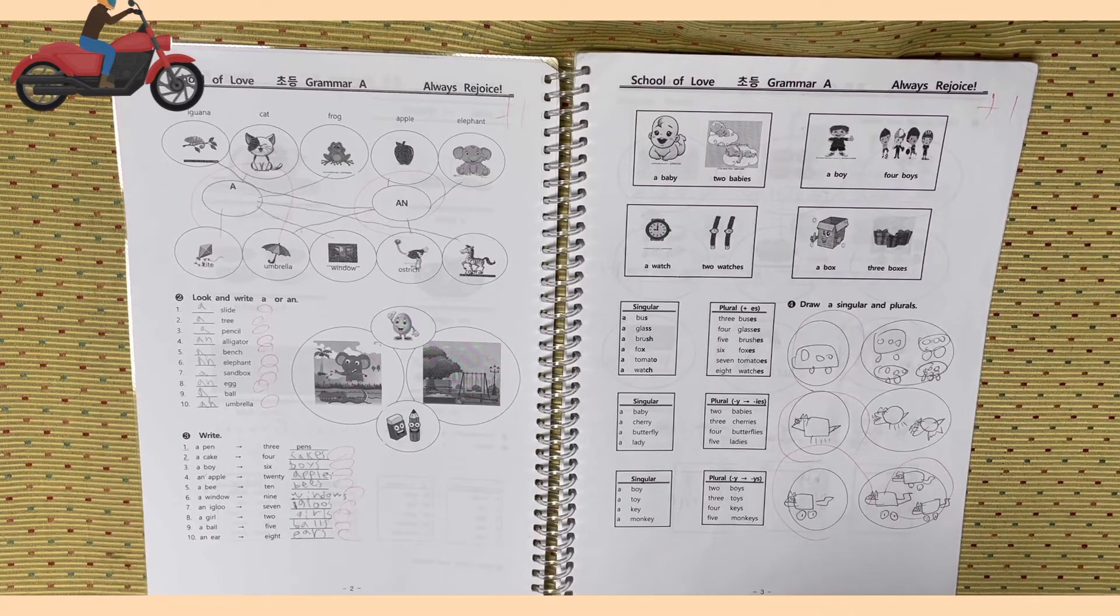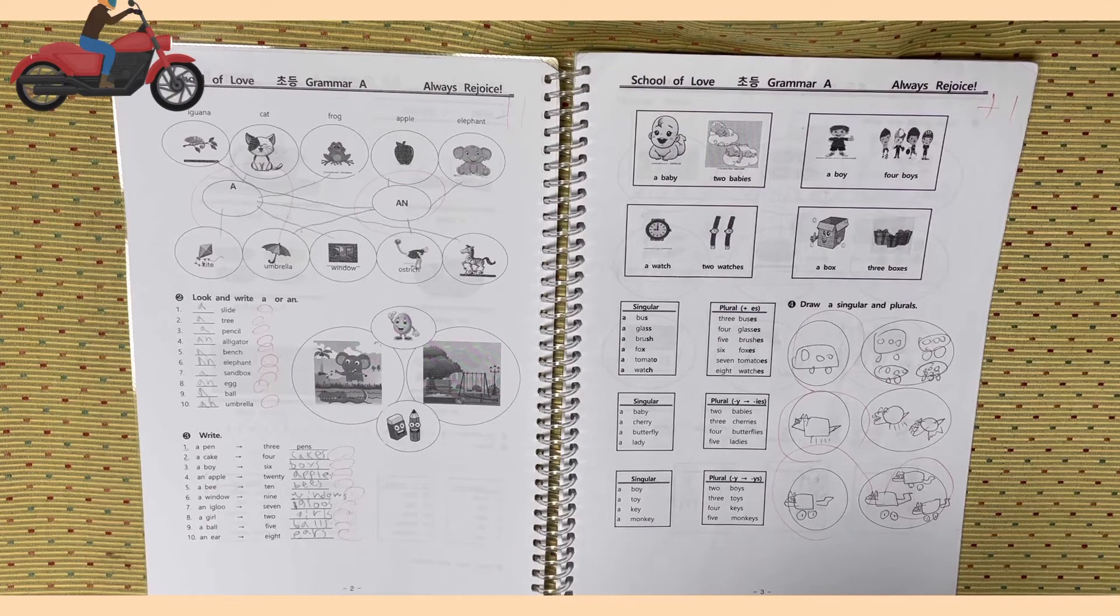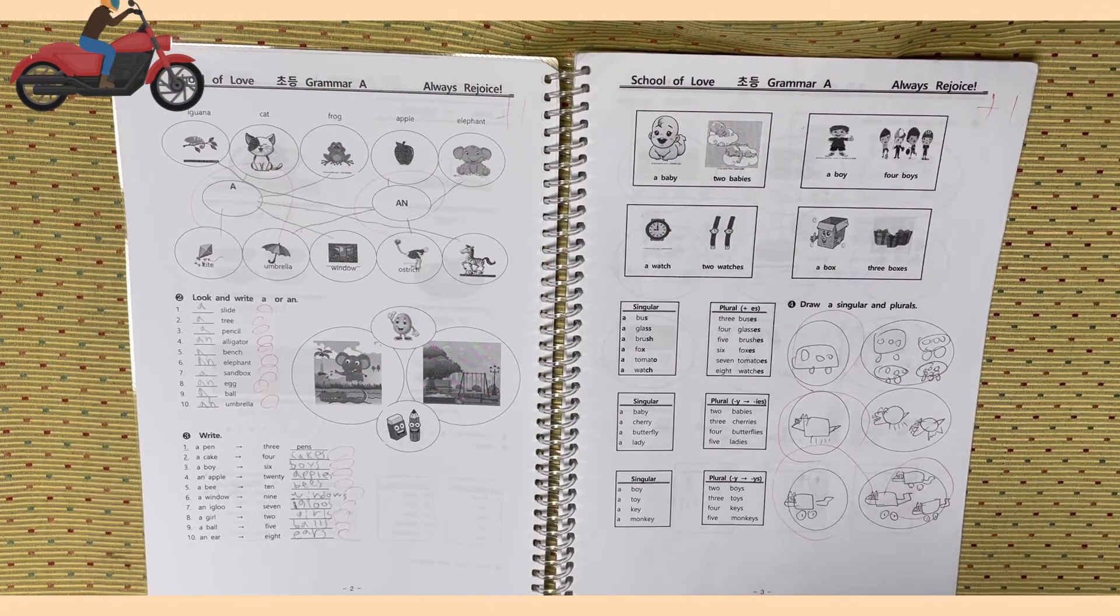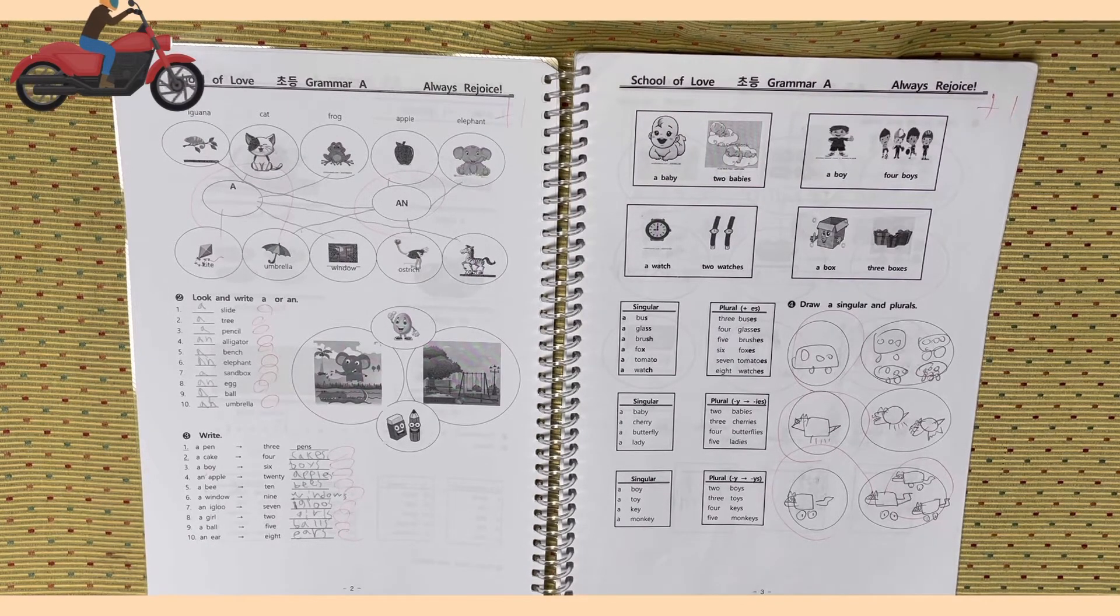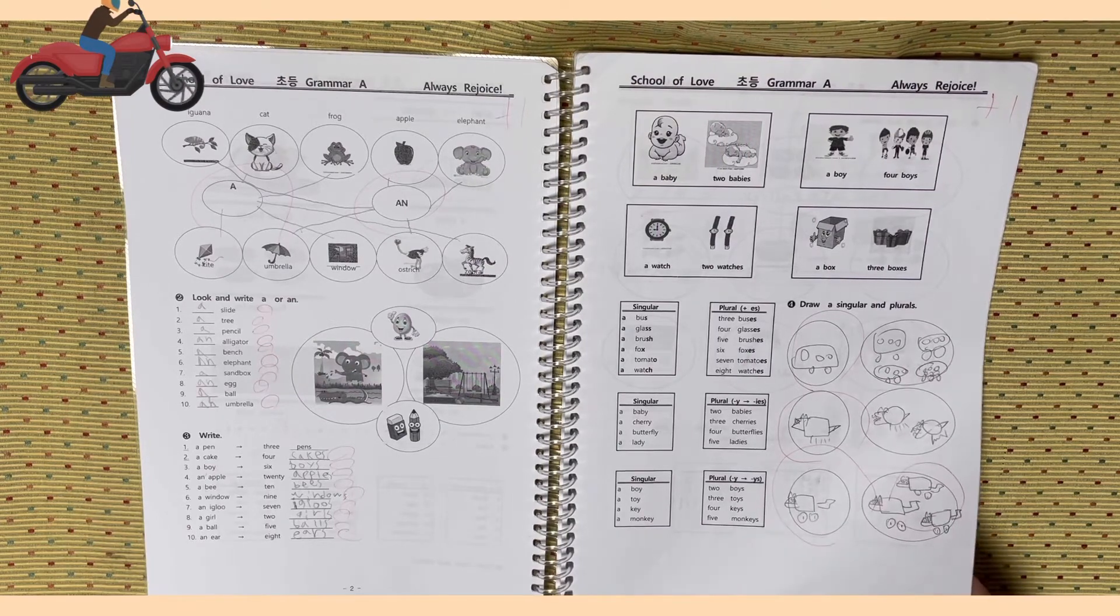A bus, three buses. A glass, four glasses. A brush, five brushes. A fox, six foxes. A tomato, seven tomatoes. A watch, eight watches. A baby, two babies. A cherry, three cherries. A butterfly, four butterflies. A lady, five ladies. A boy, two boys. A toy, three toys. A key, four keys. A monkey, five monkeys.